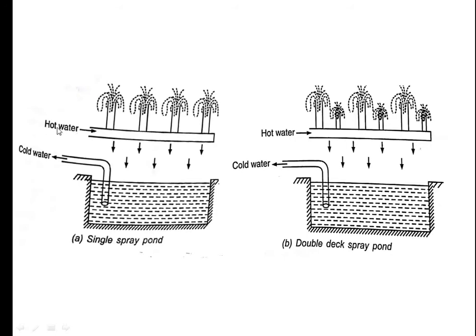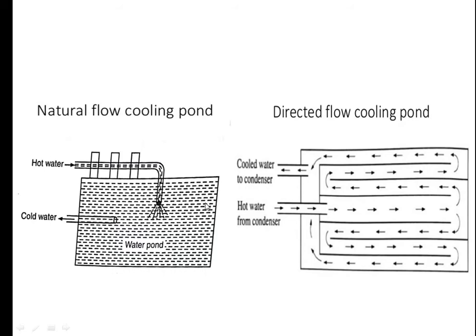The hot water comes in and is spread throughout, and the cold water is collected from the bottom of the pond. The other type is the natural flow cooling pond. In the natural flow cooling pond, water is spread in a natural way and collected from the bottom with no passage given for the water to flow. It works through natural convection only.